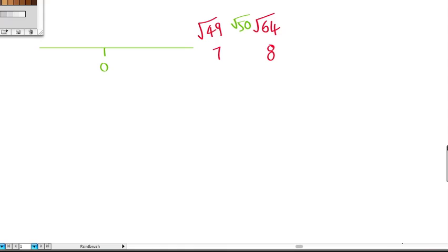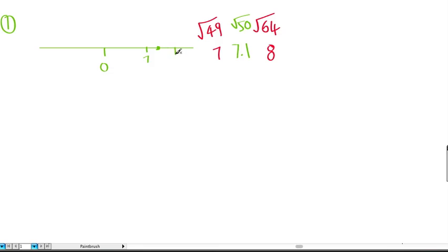So I would estimate the square root of 50 to be around 7.1. On the test we'd be given a scale, we'd know where 7 is and where 8 is, and we would plot this closer to the 7. We would label it with a dot and write the square root of 50. That's the first number we were asked to plot.